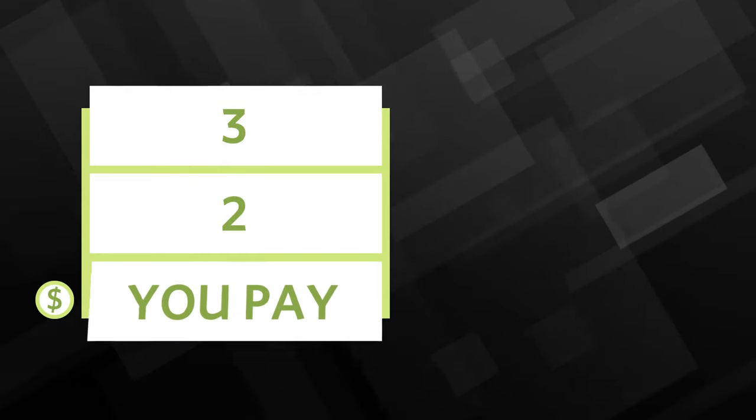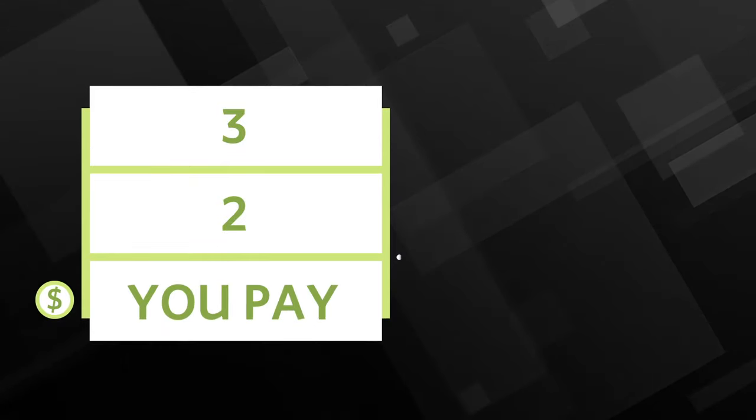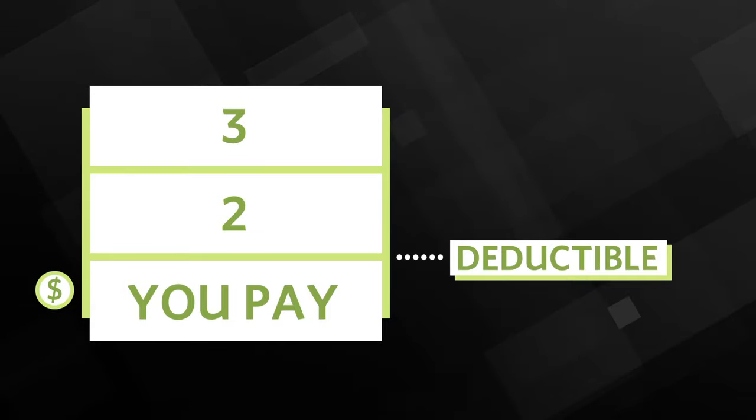Now let's bring back the three levels example from the beginning. Now you start on level one, paying basically everything out-of-pocket. That is, until you reach your deductible, and that's when you go to level two.